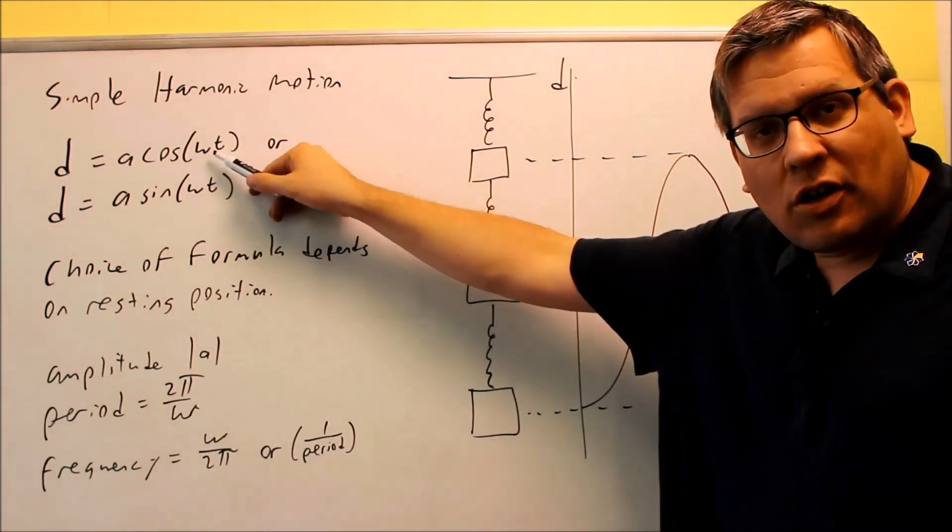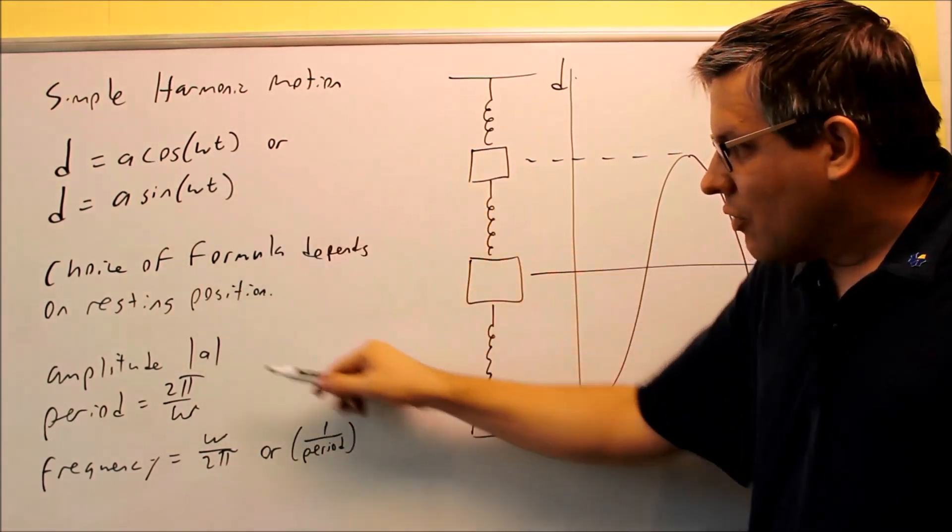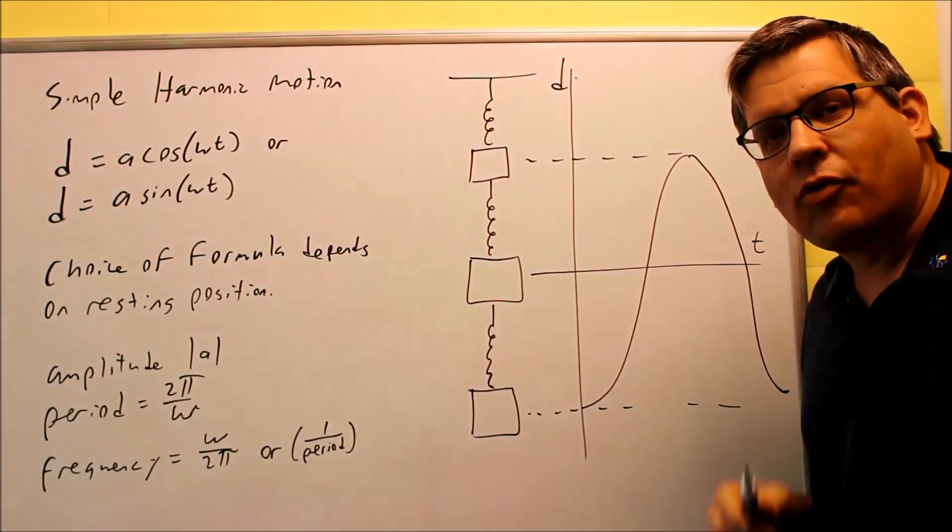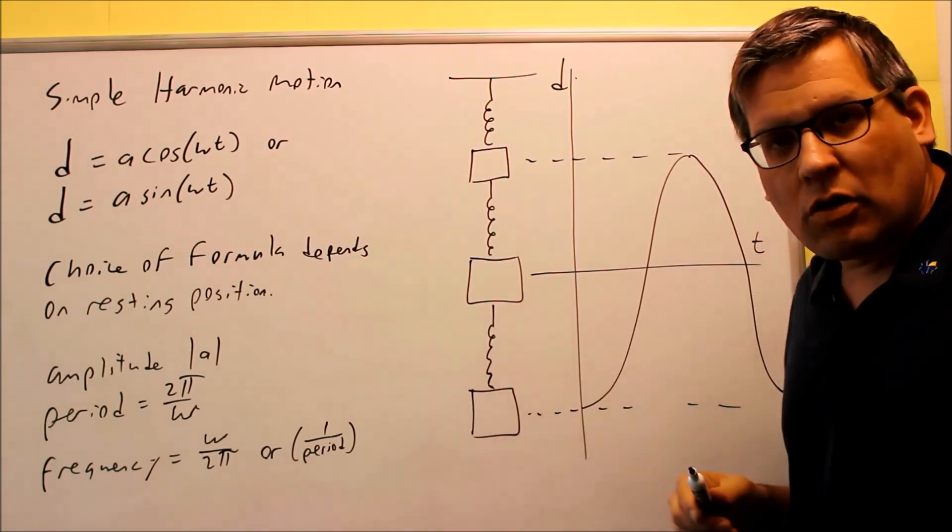Now, your period has to do with this omega here, the number in front of the t, and the formula for it is 2π over omega. That should look familiar. That's another formula we looked at before when graphing the sine and cosine graphs.